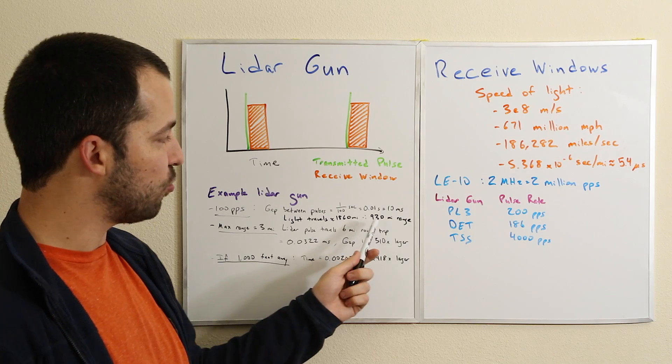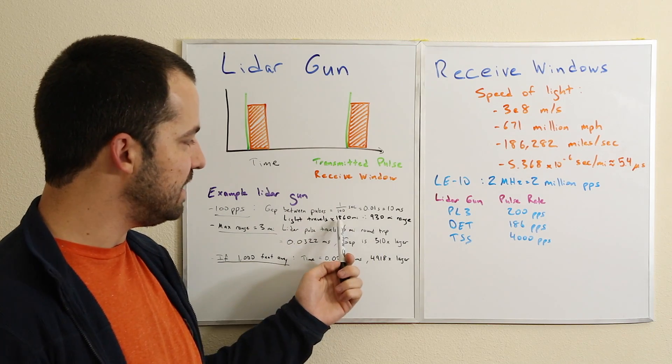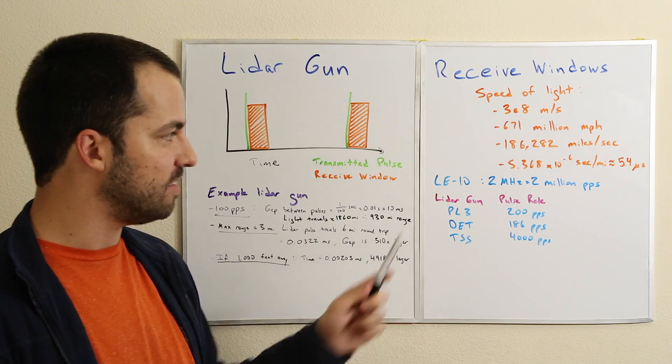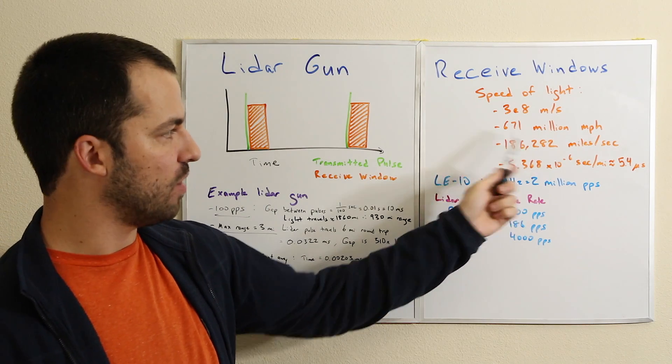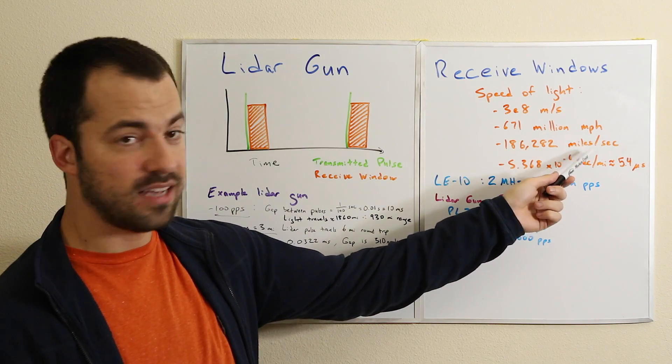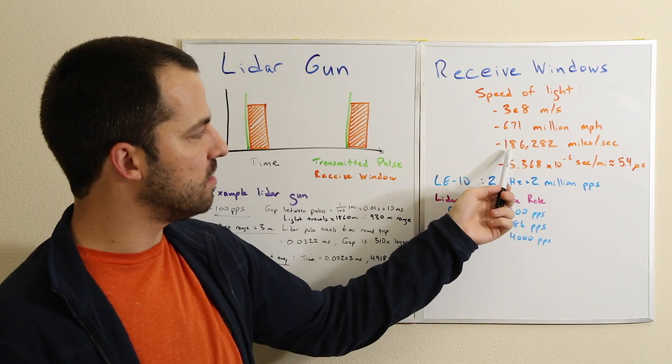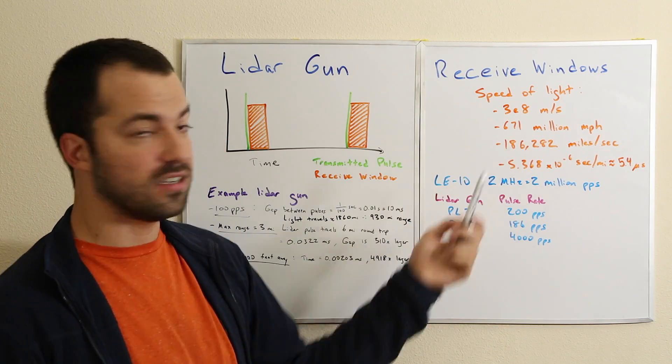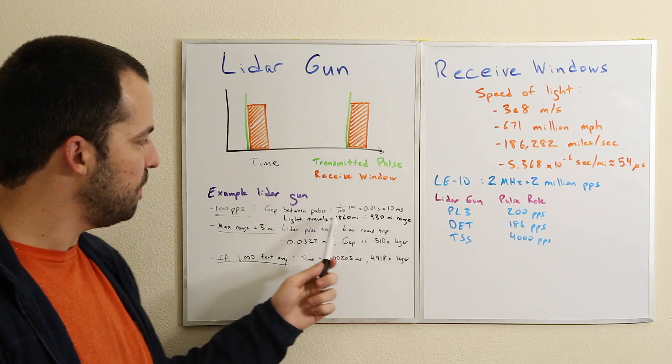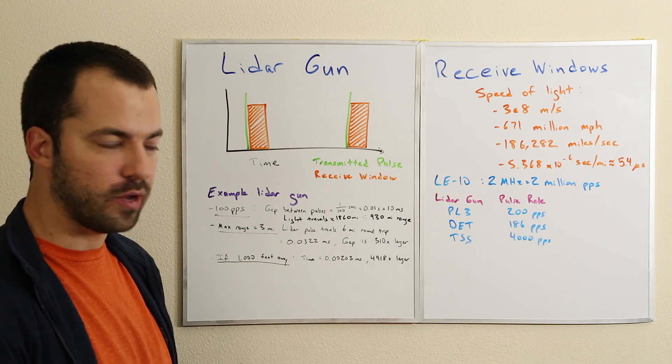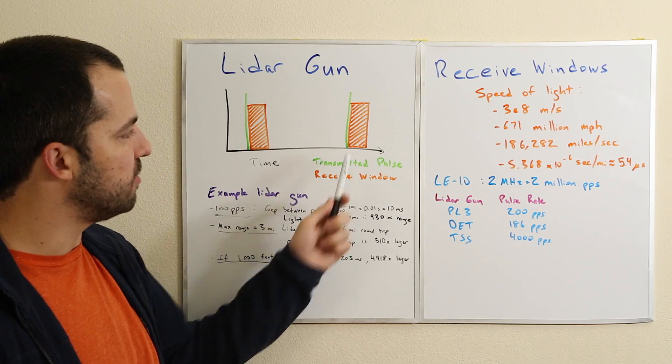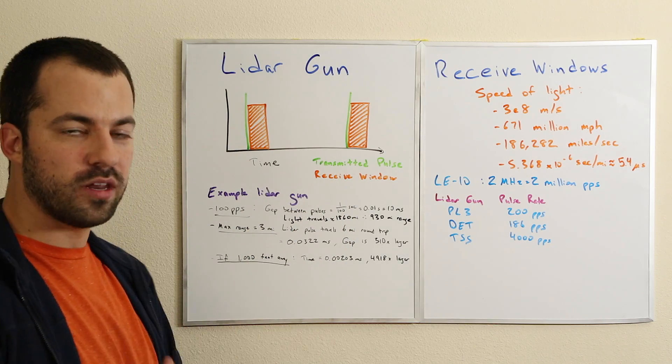In this time of 1/100th of a second, light travels about 1,860 miles. It's 1/100th of this number - if it travels 186,000 miles in a second, in 1/100th of a second it's 1,860 miles.